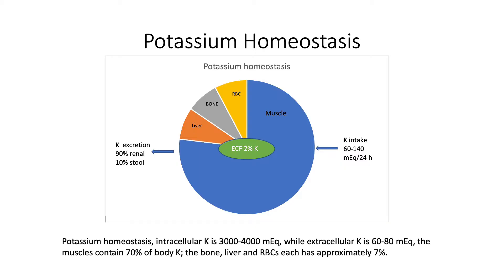Let's summarize what we talked about in the previous lecture. We talked about potassium homeostasis. Most of the potassium in the body is intracellular inside the cells, 3,000 to 4,000 milliequivalents, while only 2% is in the extracellular compartment, only 60 to 80 milliequivalents. Most of the potassium is in the muscles at 70%, while in the red blood cells, erythrocytes, bone, and liver, we have 7% in each of those compartments.